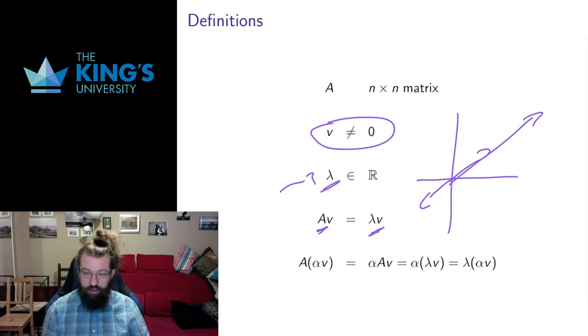So eigenvectors are vectors whose length may be changed but whose direction or the line that they sit on is not changed. It is possible for lambda to be zero, so this vector could also just be sent to zero.